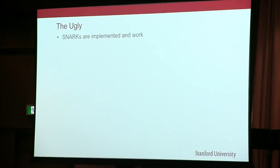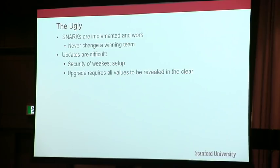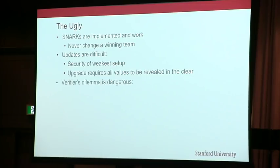What is the ugly here? SNARKs are implemented and work — never change a winning team. Updates are really difficult: you always have the security of the weakest setup in your chain. If you really wanted to update to Bulletproofs, you have to reveal all values — the same turnstile thing being done for Sapling. You don't get the benefits unless you do this. And the verifier's dilemma is very dangerous: from game-theoretic reasons it's very important that verification is almost free.